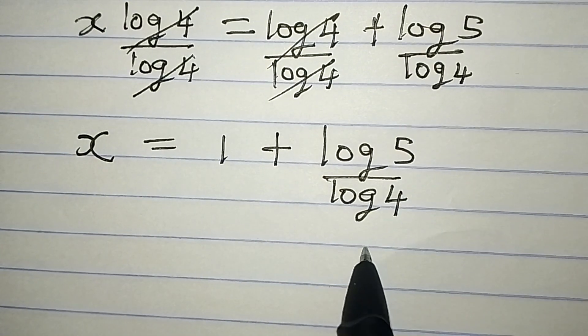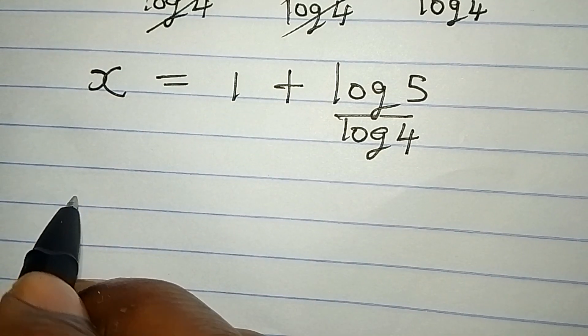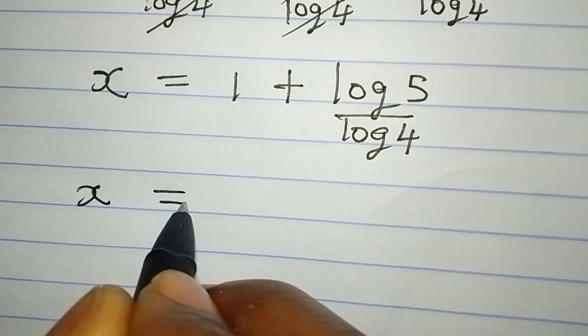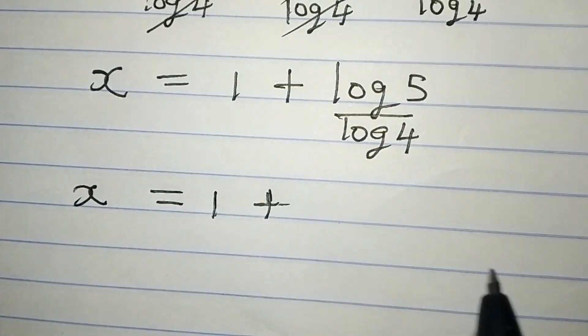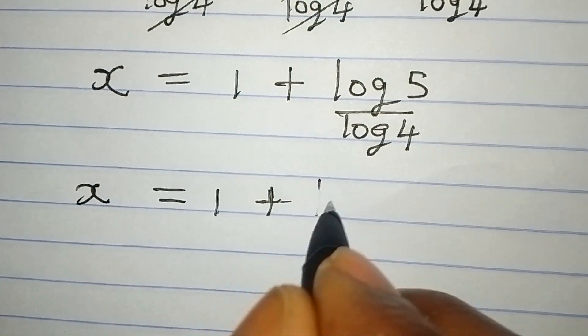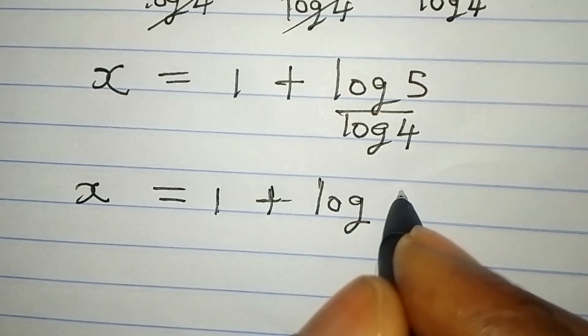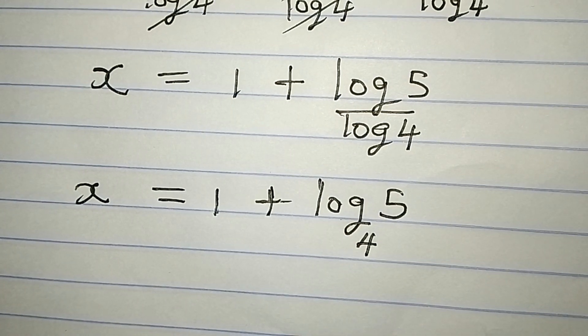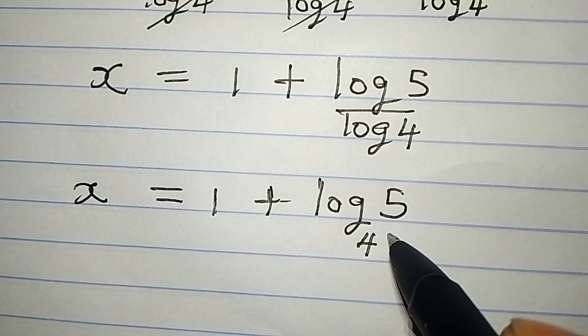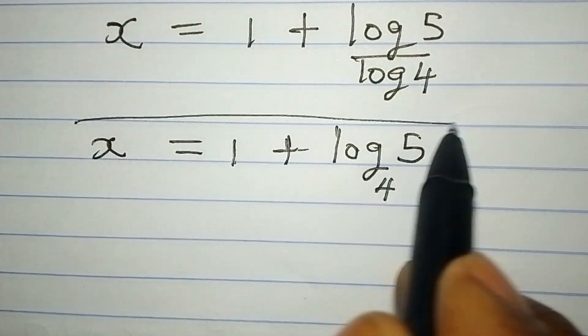This log 5 and log 4 are in the same base. So this means we can write it as x being equal to 1 plus log 5 to base 4. This and this are the same thing. So this becomes the value of x.